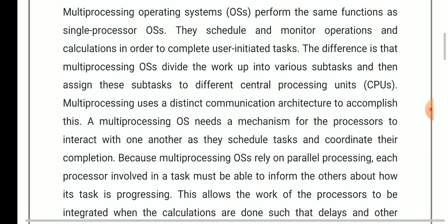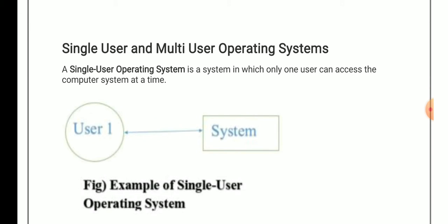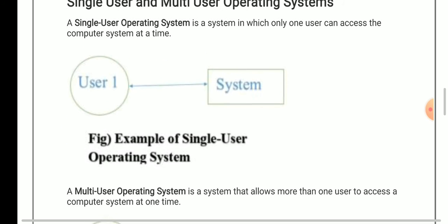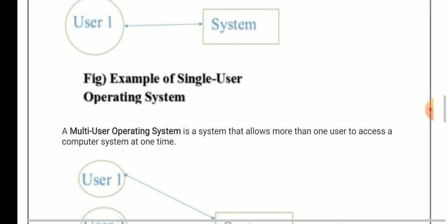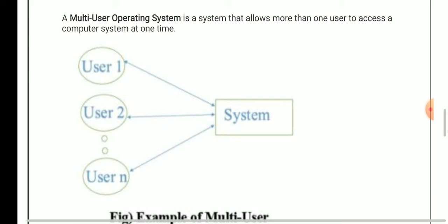Now we cover another topic: single user and multi-user operating systems. As the name indicates, in a single user operating system, only one user can use the computer system at a time — single user, single system. In a multi-user operating system, multiple users can access a system at one time.